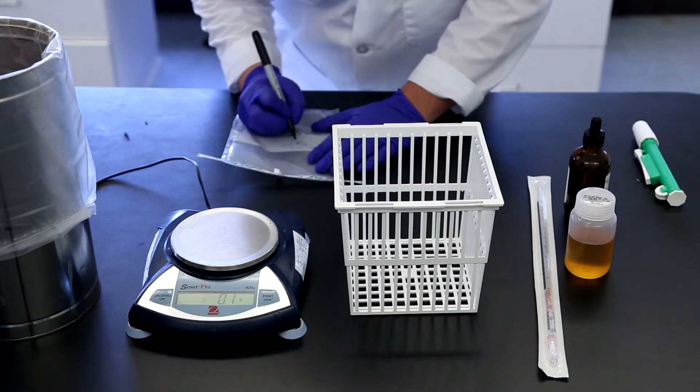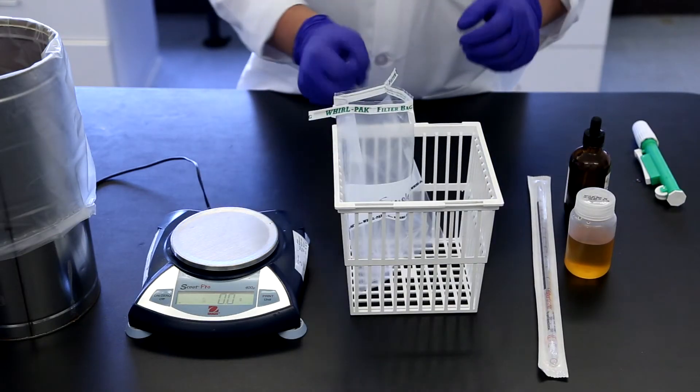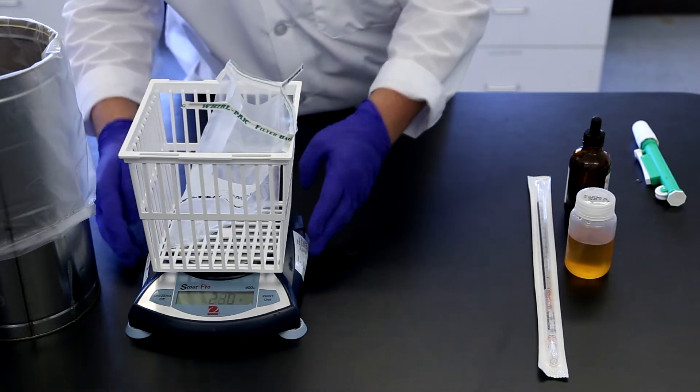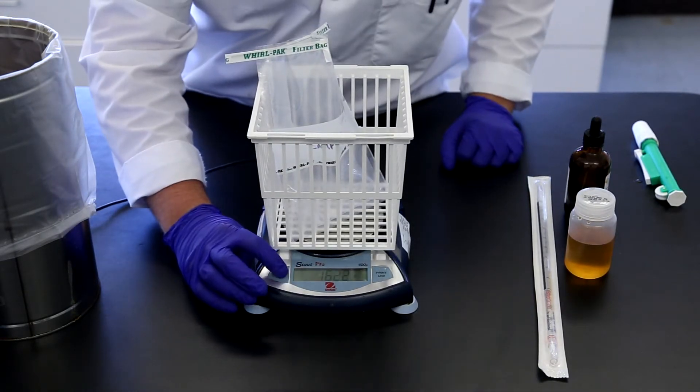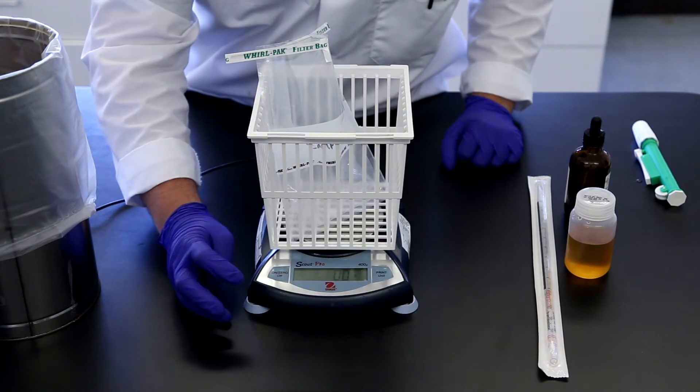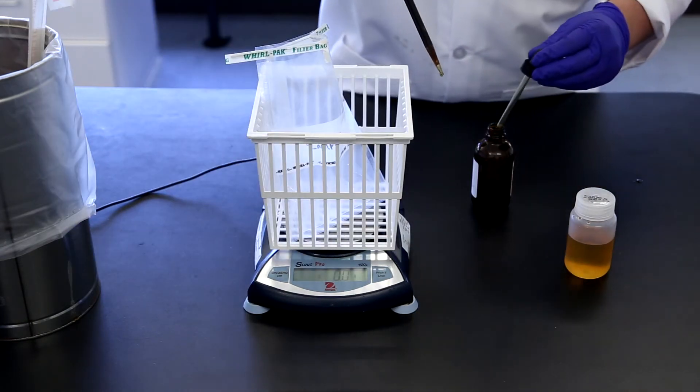Label the sample vessel with a unique ID. Place it in a sample basket, place both on a scale, and tare. Then add 10 milliliters of your sample.